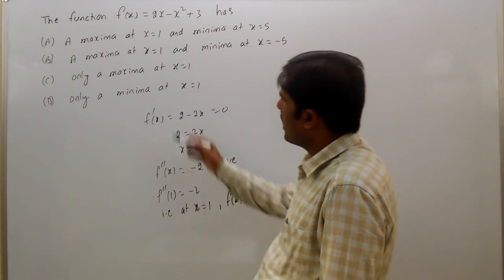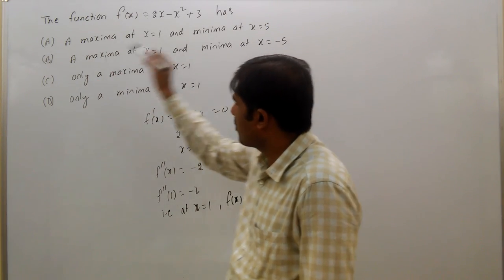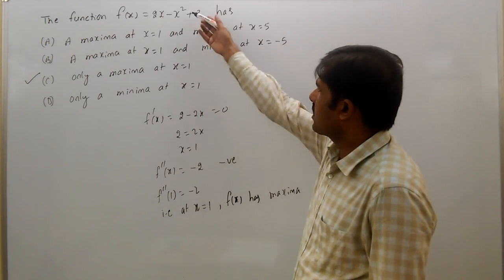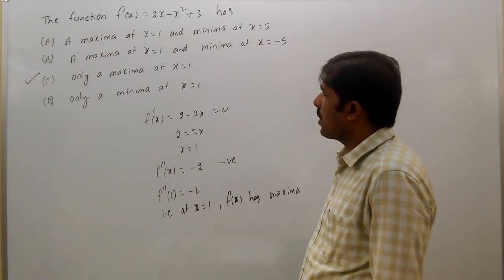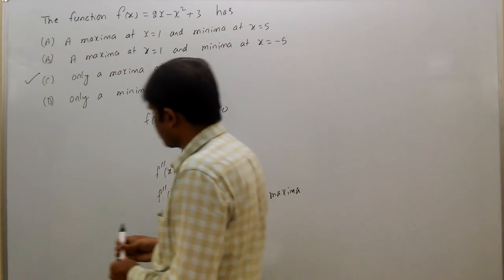So it has only a maxima at x = 1, because that is the only extremum point. Since it is second degree, only one extremum point will be there. That is the answer.